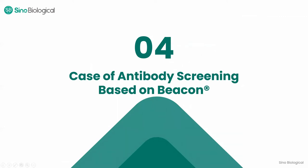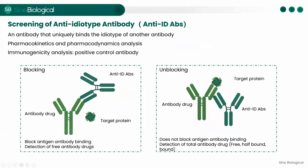Now let's take a look at case studies of antibodies developed on the Beacon system. Anti-idiotype (anti-ID) antibody is an antibody that specifically recognizes the variable region of an antibody drug. It is widely used in the pharmacokinetic (PK) and pharmacodynamic (PD) studies of antibody drugs during drug development. For example, in PK studies, anti-ID antibodies are used to detect the levels of antibody drugs in vivo, and they can also be used as positive control antibodies for ligand binding assays and antibody blocking assays.